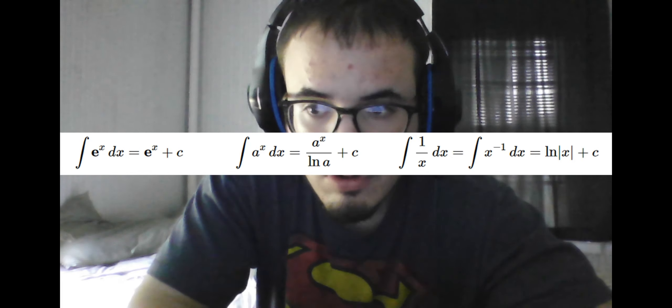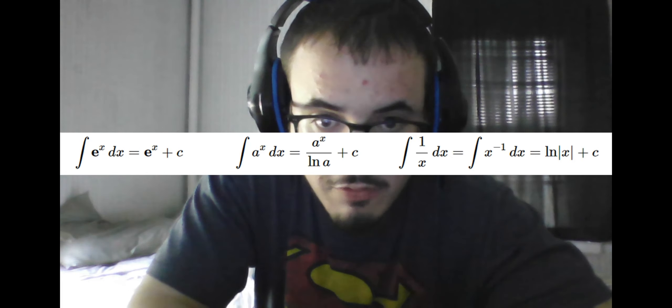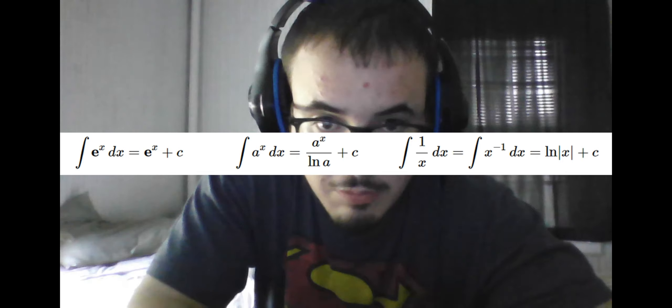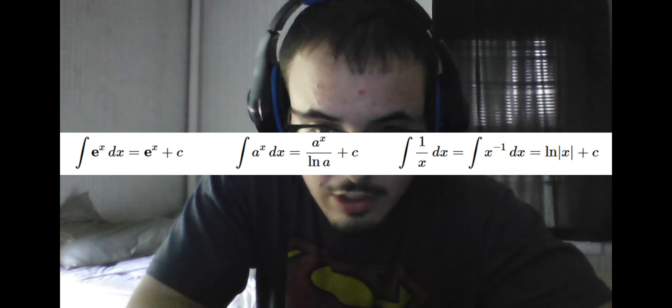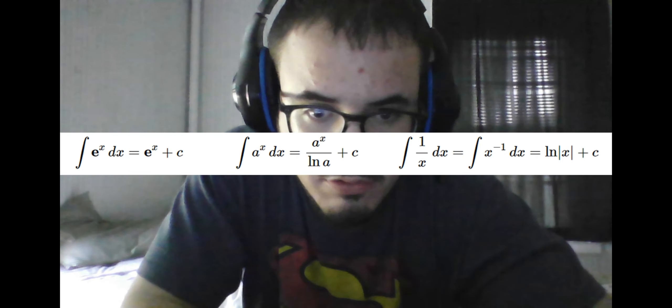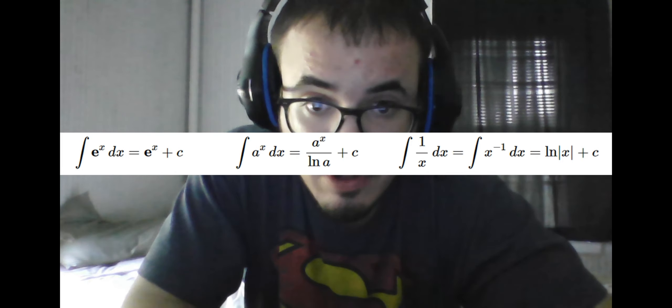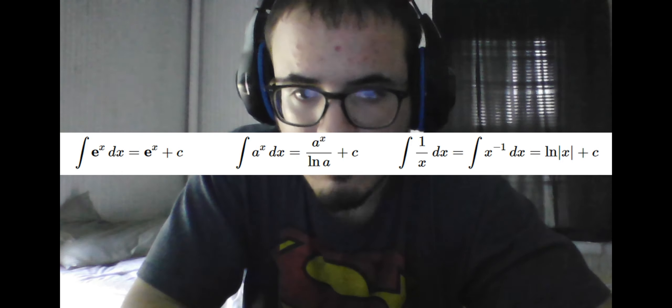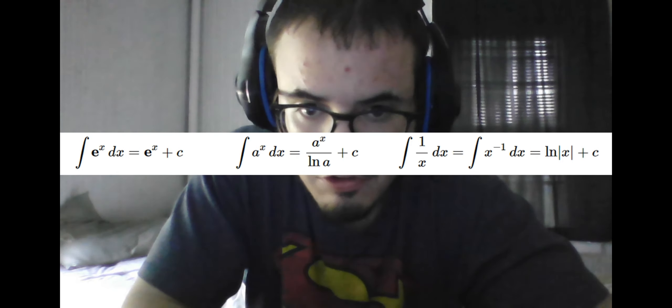Since we remember the derivative of ln is 1 over x, it follows the integral of 1 over x is ln of absolute value of x, the absolute value being important here, because 1 over x has a greater domain or range of x's than ln does. So we take the absolute value of the argument so that ln is always positive and existent.